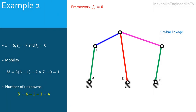In the six-bar mechanism shown here, L equals 6, J1 equals 7, J2 equals 0, thus mobility is 1. The number of unknowns is 6 minus 1 minus 1, so U equals 4. For this six-bar mechanism, the position problem will be written in terms of four independent algebraic equations.